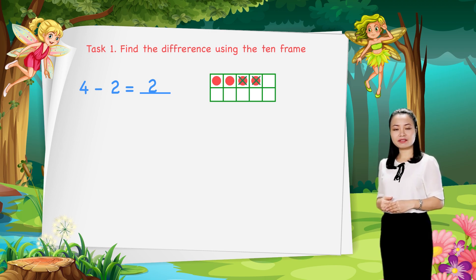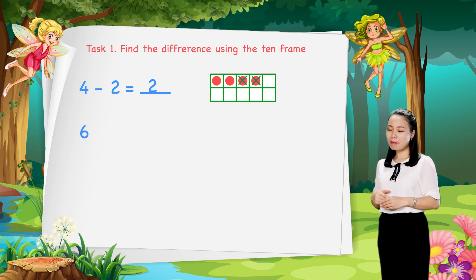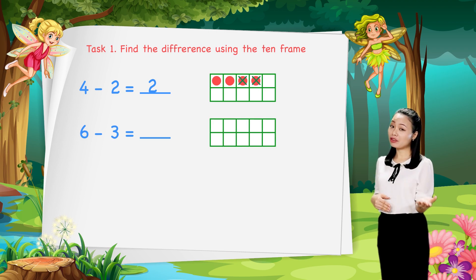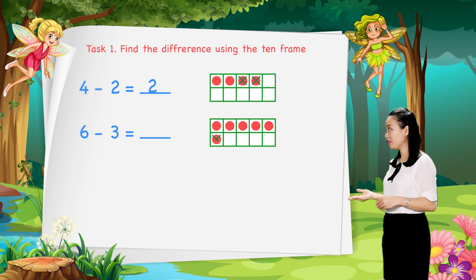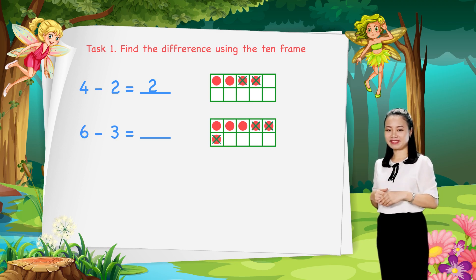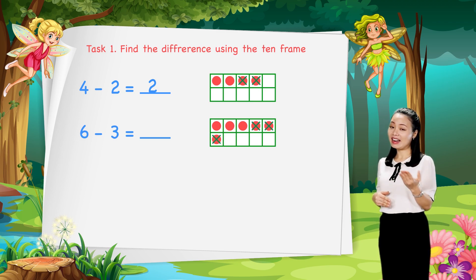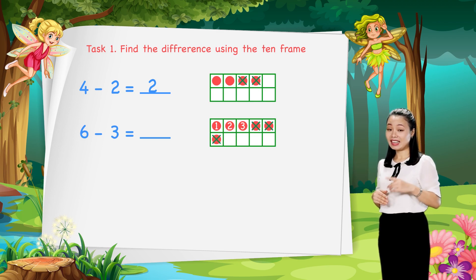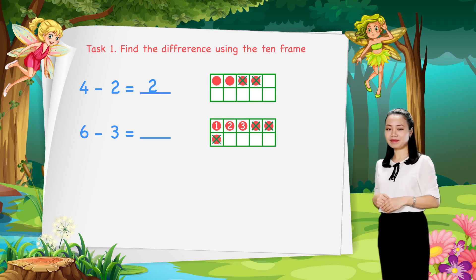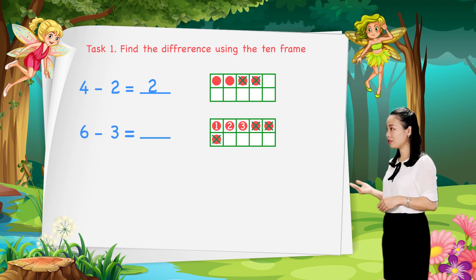Next, find 6 minus 3. We draw 6 dots in the 10 frame. Then, cross out 3 dots. Then, count the number of dots left to find the difference. Let's count: 1, 2, 3. So, 3 dots left. Therefore, 6 minus 3 equals 3.